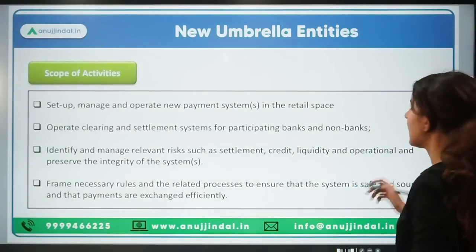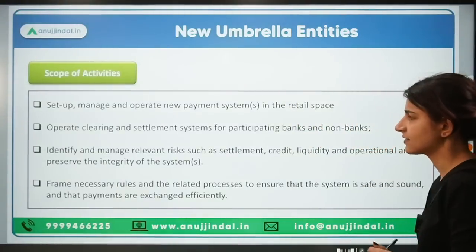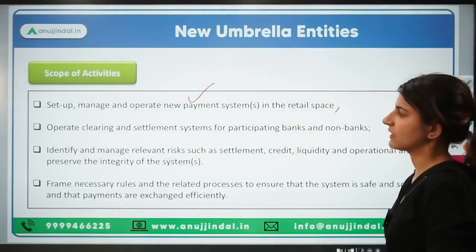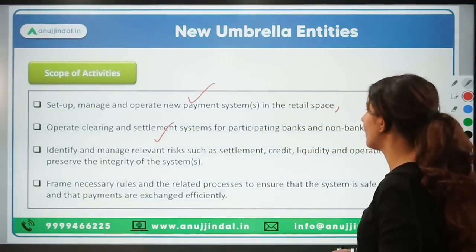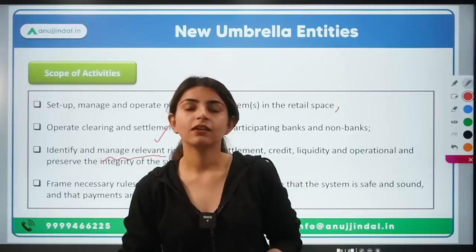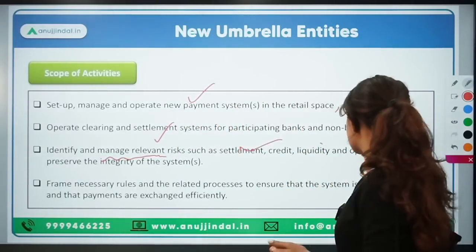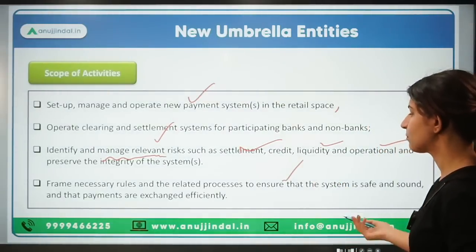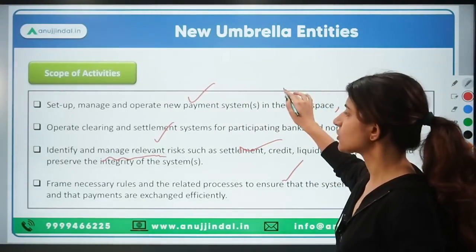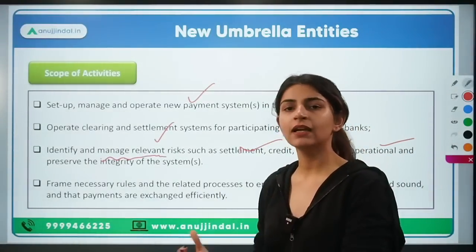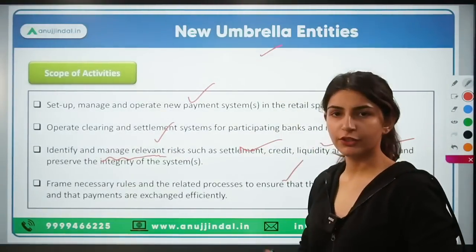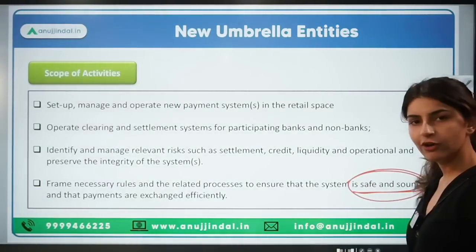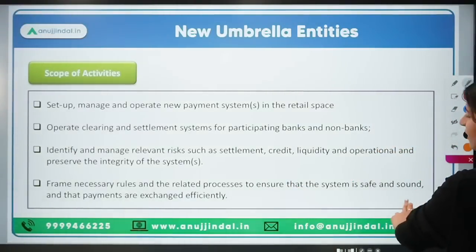The scope of activities for new umbrella entities is similar to NPCI's scope. They can set up, manage, and operate new payment systems in the retail space, bringing new products in the digital retail space. They operate the clearing and settlement system for participating banks and non-banks, identify and manage relevant risks such as credit risk, liquidity, and operational risks, and frame rules and guidelines for new or existing products. They must also ensure the system is safe and sound.